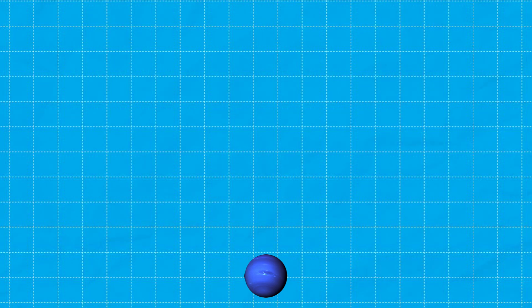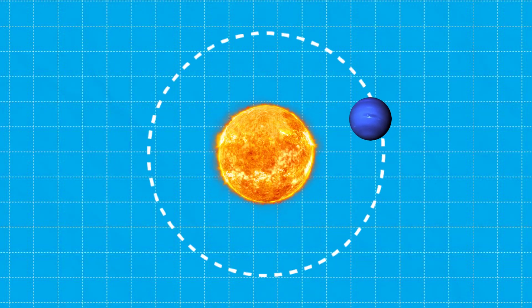Hence, as Neptune orbits the Sun, Triton's polar regions take turns facing the Sun, resulting in seasonal changes as one pole, then the other moves into the sunlight.